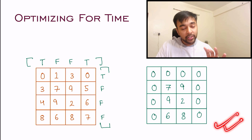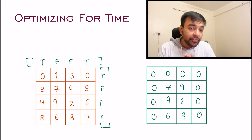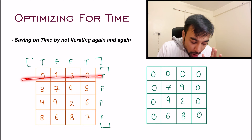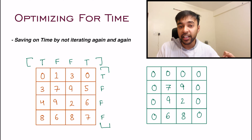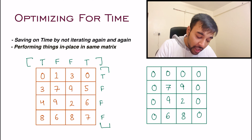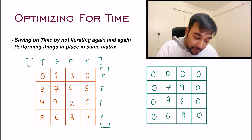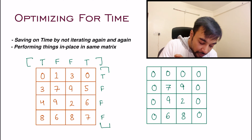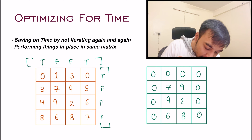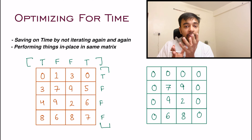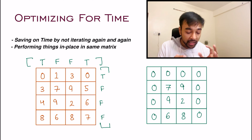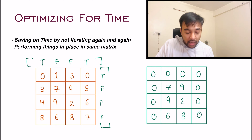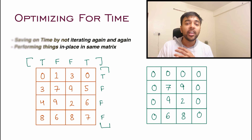With this approach, we achieved two outcomes: we saved a lot on time because we are not iterating through the entire matrix again and again, and we are doing all modifications in place rather than taking an additional matrix to store temporary results. However, we did take some extra space for the intermediate arrays, so that is one area where we can still optimize.